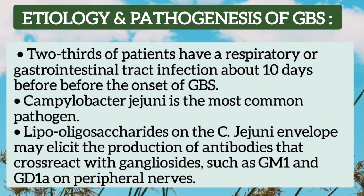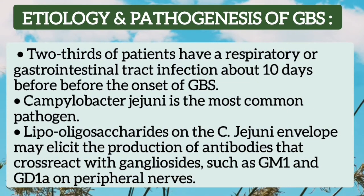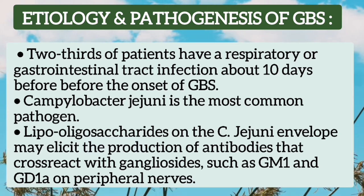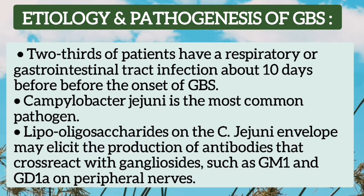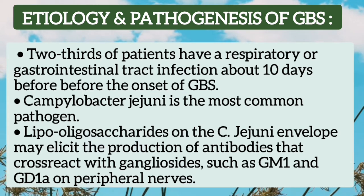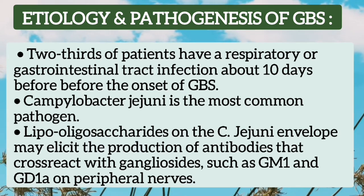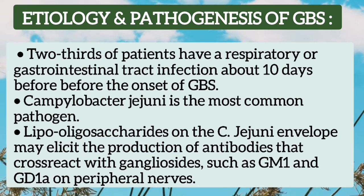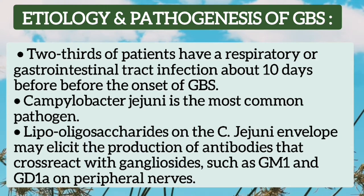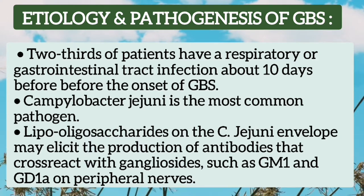Two-thirds of patients have a respiratory or gastrointestinal tract infection about 10 days before the onset of GBS. Campylobacter jejuni is the most common pathogen. The envelope of Campylobacter jejuni contains lipooligosaccharides, which elicit production of antibodies in the host. These antibodies cross-react with gangliosides present on the peripheral nerves.